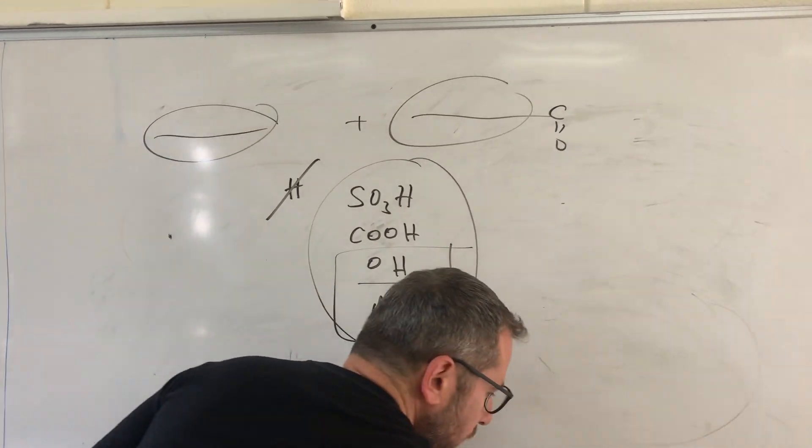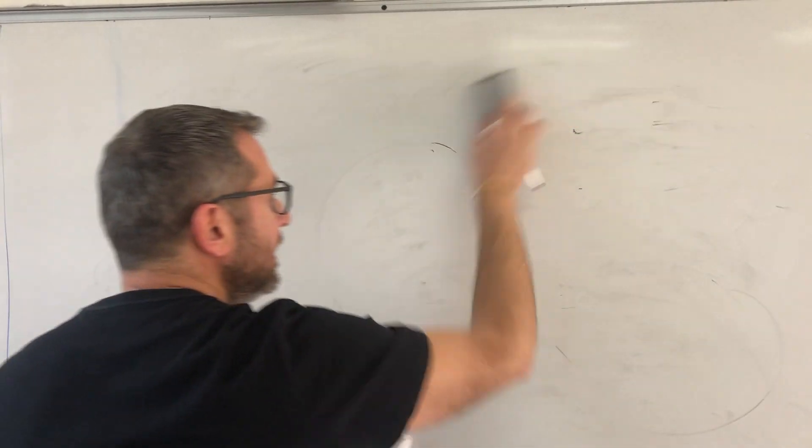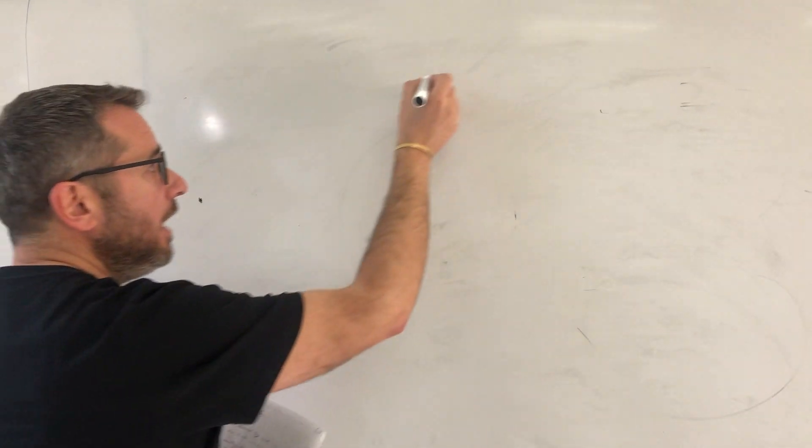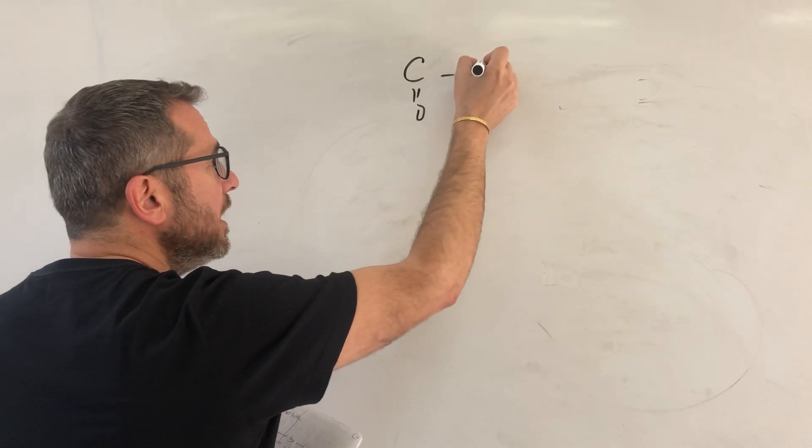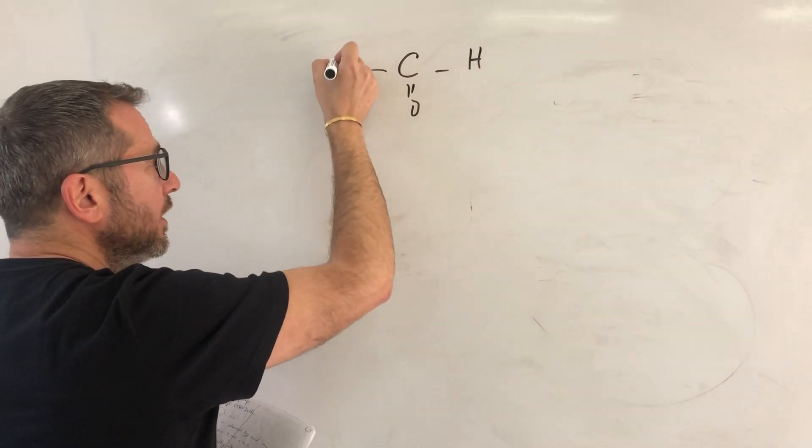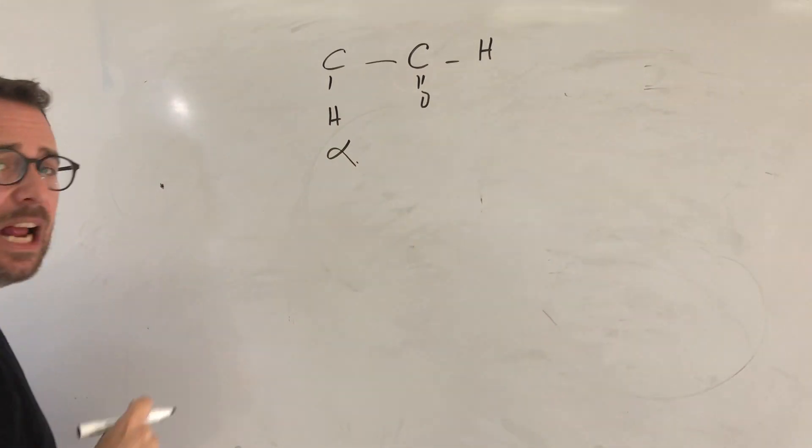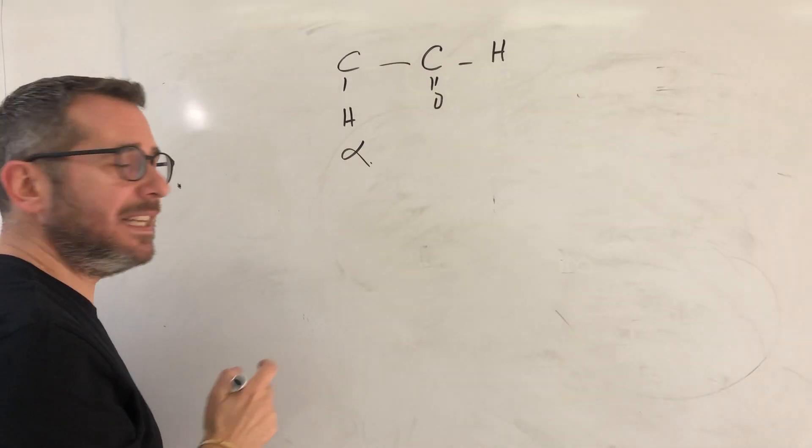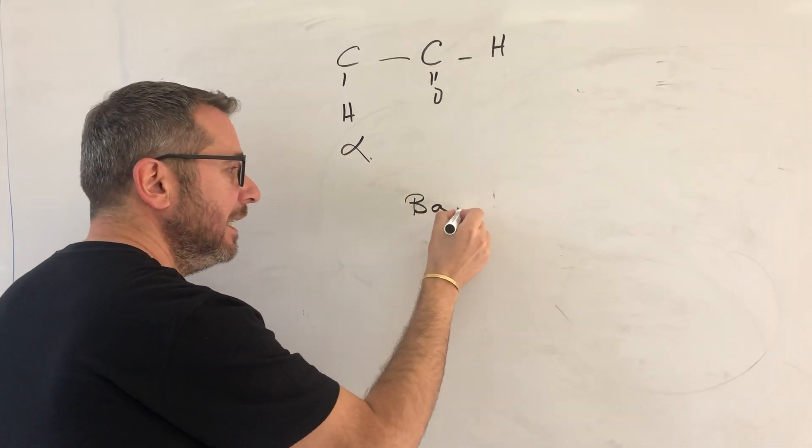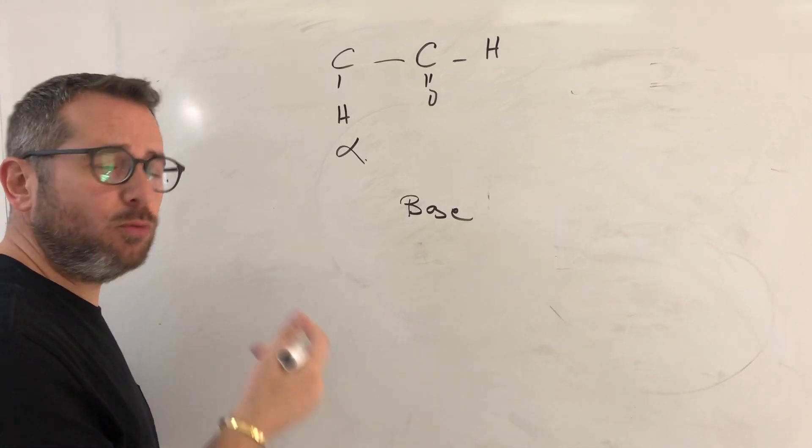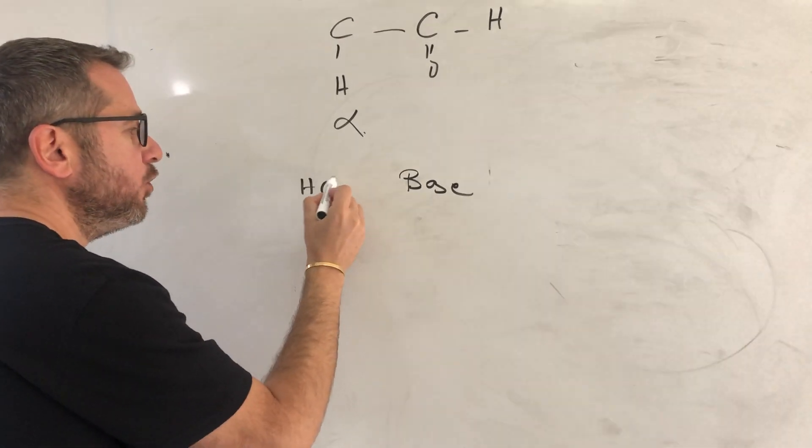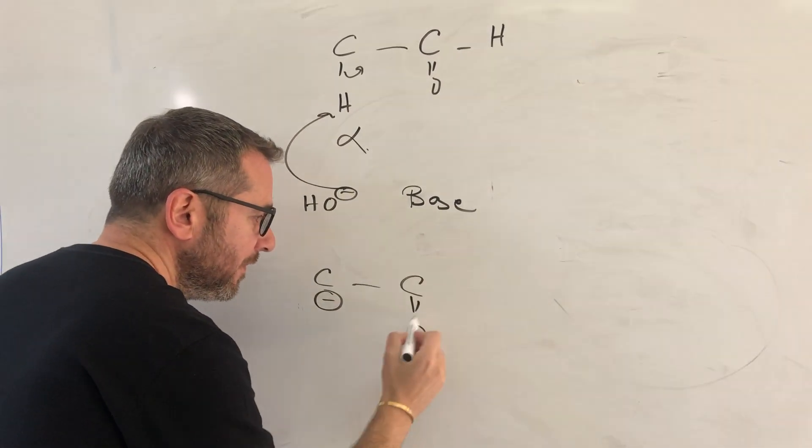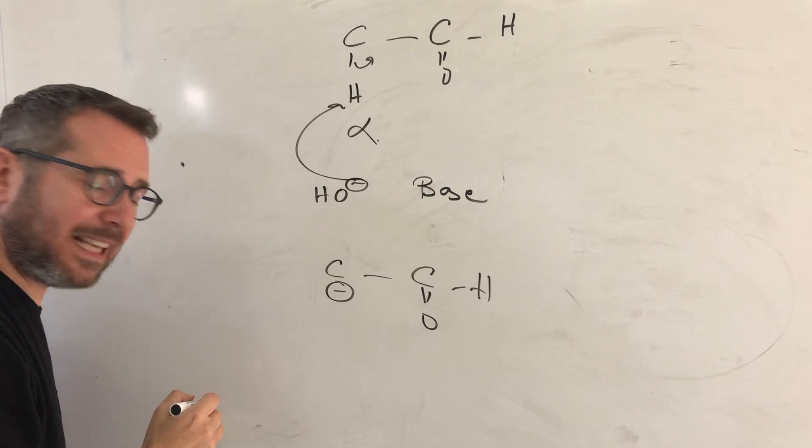Now we will continue with reactions 8 and 9, which are identical: halogenation and alkylation. If you have a carbonyl compound, aldehyde or ketone, I will take for example an aldehyde. This is H-alpha. Don't forget that H-alpha next to the carbonyl is the most acidic H. So if you add a base like HO-, the base will abstract the H-alpha to give the carbanion and this can act as a nucleophile.